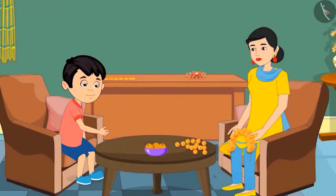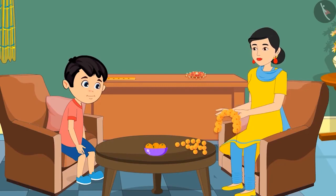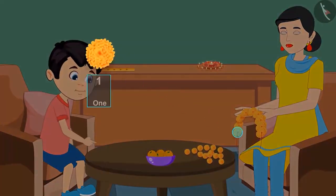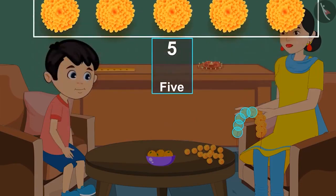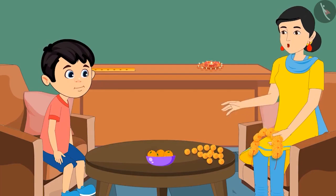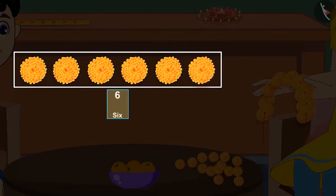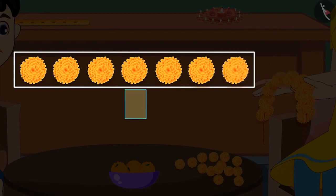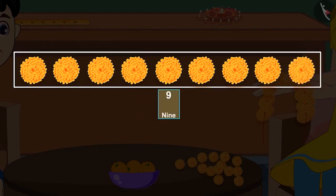Chotu asks to help make the garland. The mother asks how many flowers are in the garland. Chotu counts to five but isn't sure about the rest. The mother explains: with five flowers, add one more to get six; add another to get seven; then another for eight; and the last flower makes nine. She asks Chotu to count again: one, two, three, four, five, six, seven, eight and nine — nine flowers.